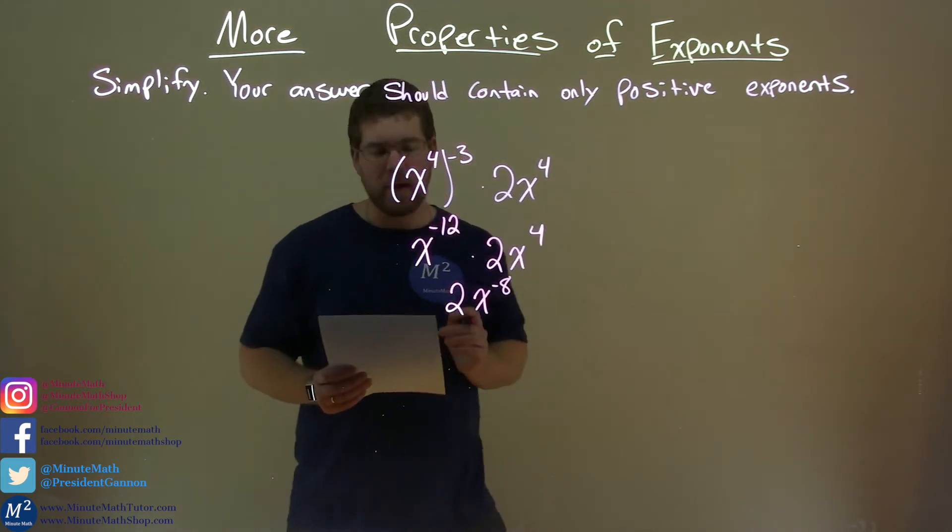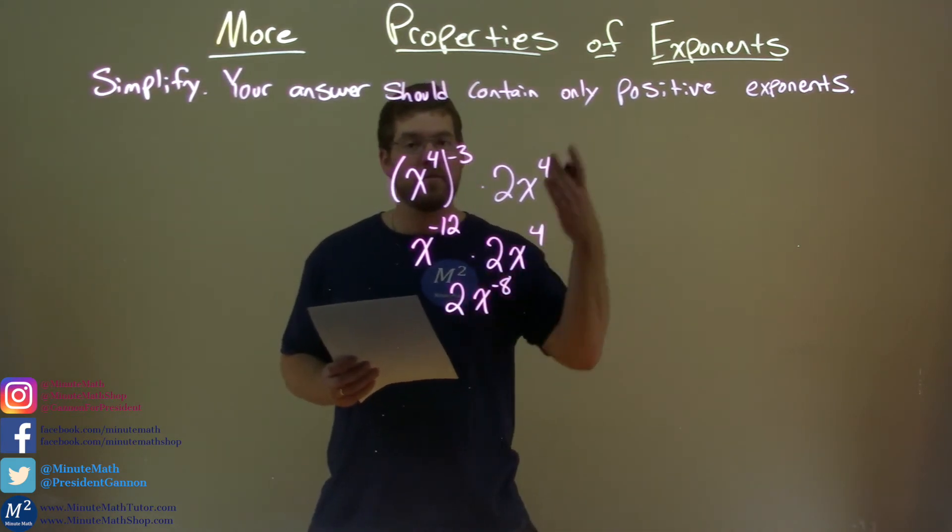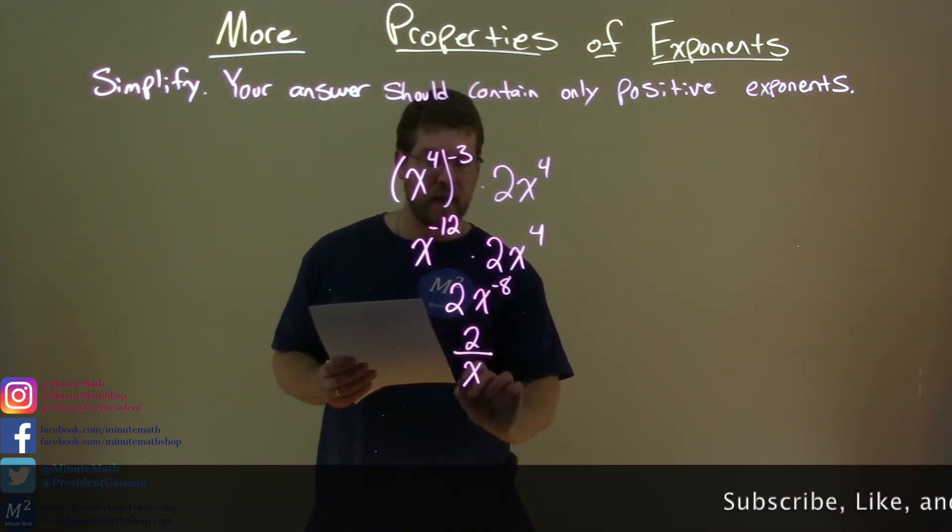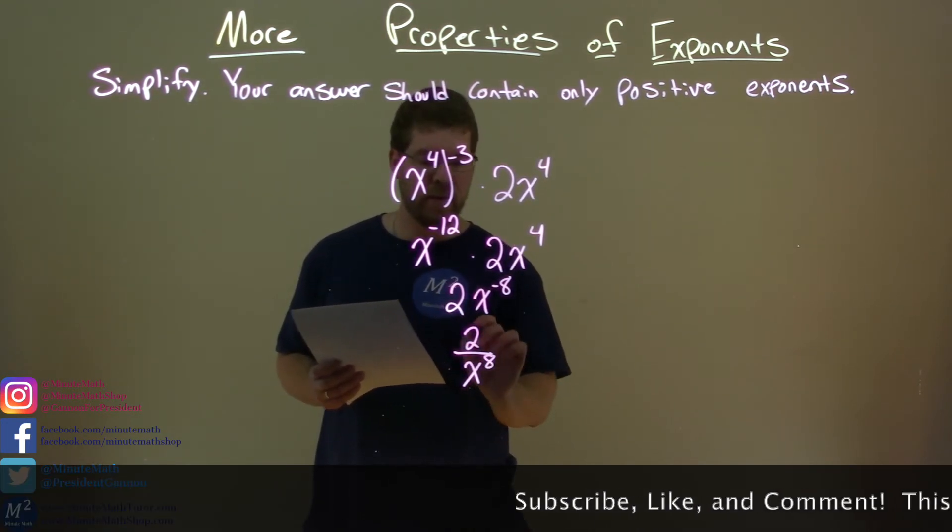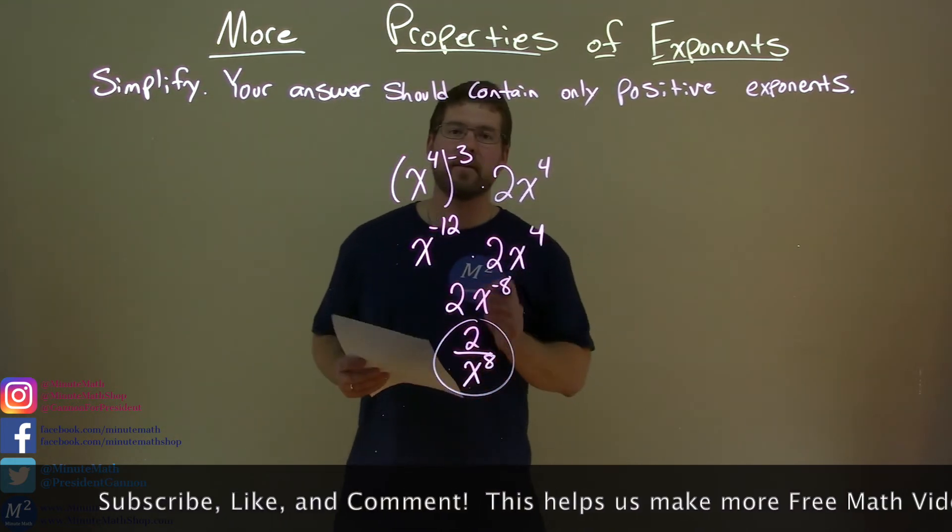We said we have to have positive exponents. So we know x to the negative 8th power is the same thing as 1 over x to the positive 8th power. So the 2 stays here, bring the x down, but now make it to a positive 8th power, and now we're done. 2 over x to the positive 8th power.